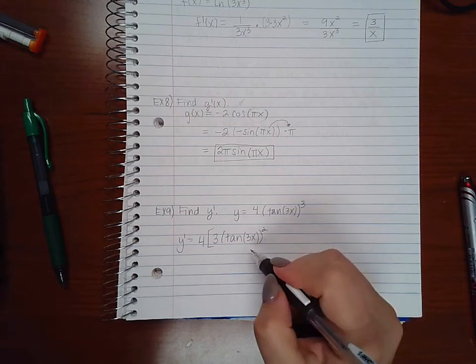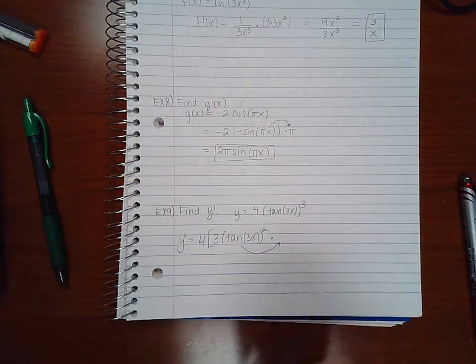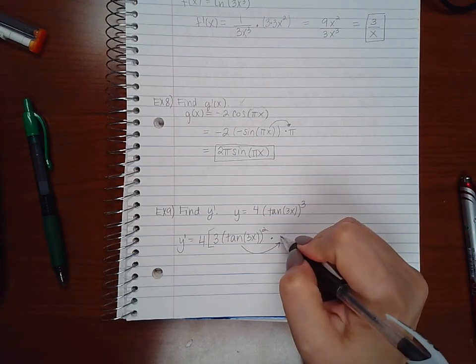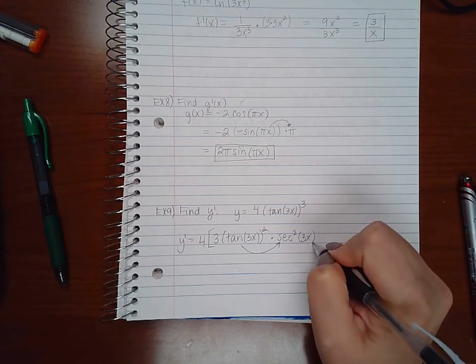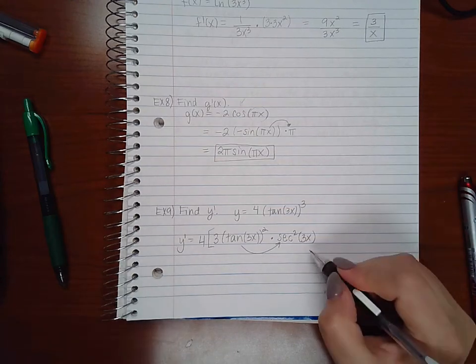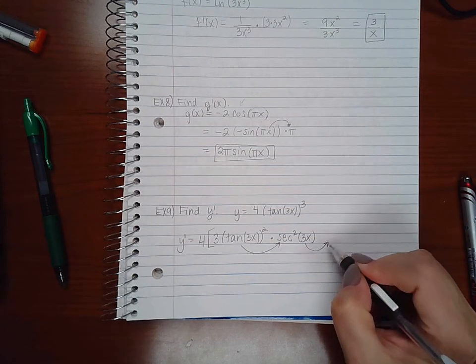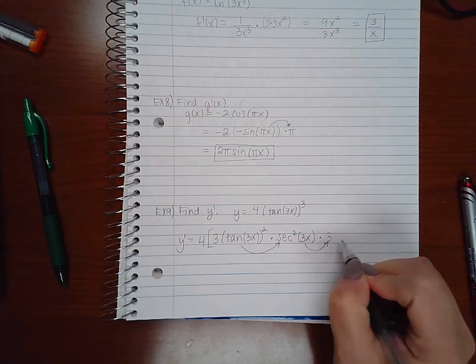But because the base is not just an x, we do have to multiply by the derivative of that. And the derivative of tangent is secant squared, and whatever that angle is I have to repeat it. However, the angle itself is not just x, so we have to multiply by the derivative of it. So there's that double linked chain. Derivative of 3x is 3.